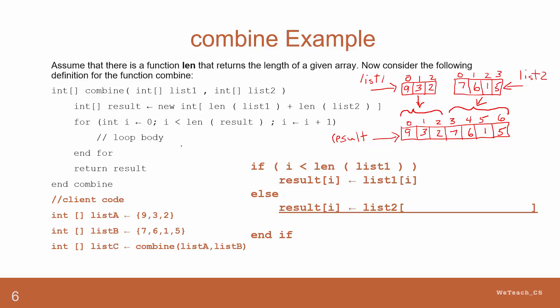This means that when the value of i is 0, 1 or 2, the if statement is true, and the array result will be assigned the values from list1 in positions 0, 1 and 2 of the result array.